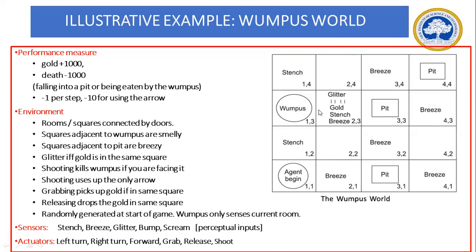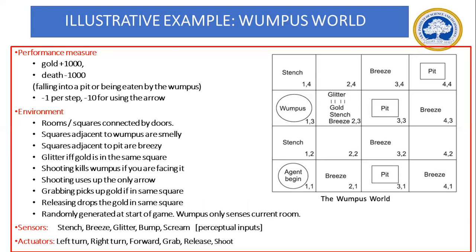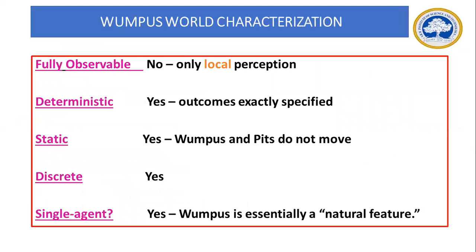The environment consists of rooms in the form of squares connected by doors. Adjacent to the Wumpus there is a stench smell; adjacent to a pit there is a breeze. Sensors include the five percepts — stench, breeze, glitter, bump, scream — and the actuators are the actions the agent performs: turn left, turn right, go forward, grab, release, and shoot.